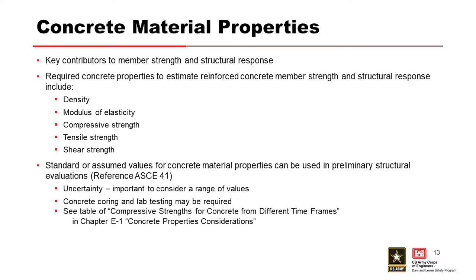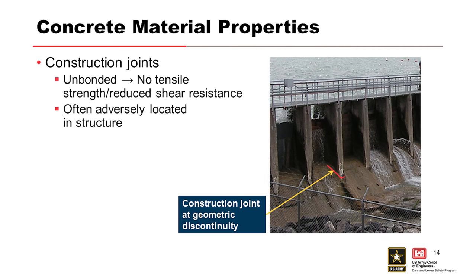Concrete coring is great when you can do it, but some levels of study don't allow for it. Reference the E1 chapter as a great reference for concrete material. Construction joints, whether bonded or unbonded, are important to consider. Oftentimes construction joints are where we'd least like to have them structurally, but in many cases the construction joint is right at the top of the ogee crest where the wall starts — which is also where you anticipate the highest moments.